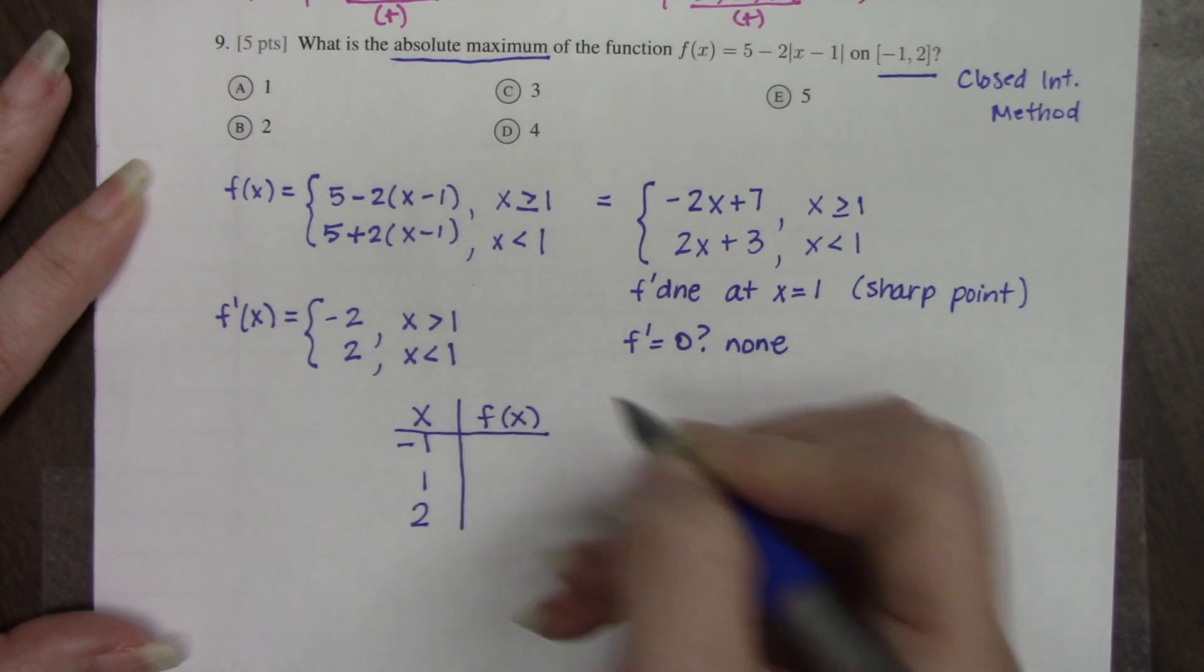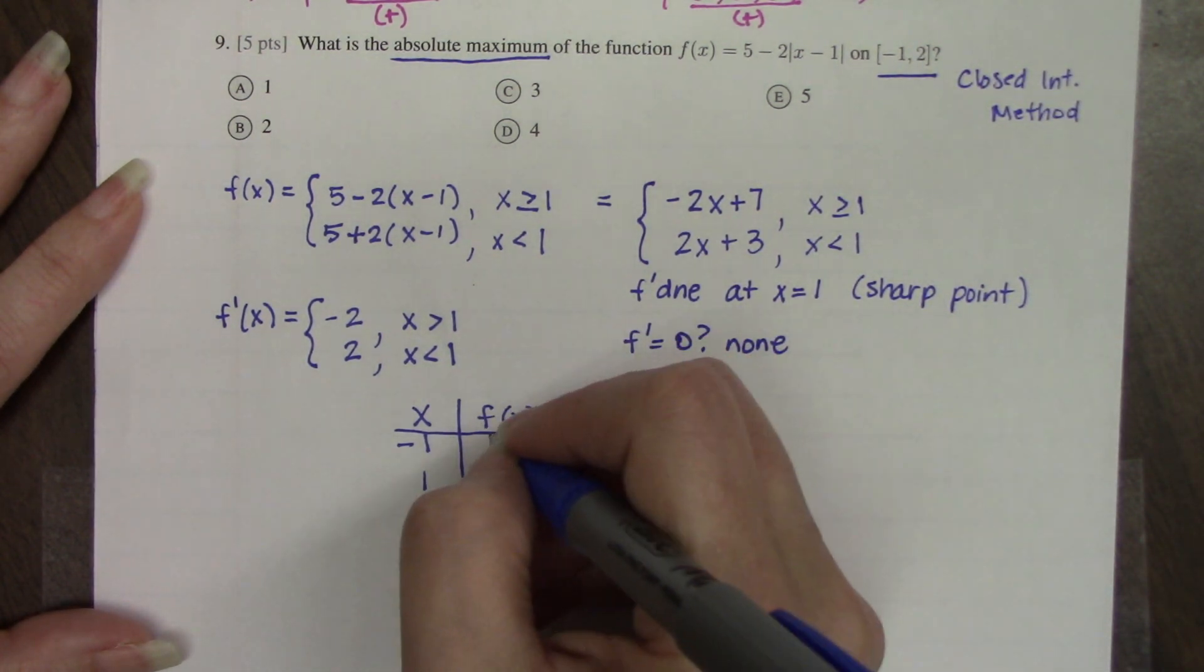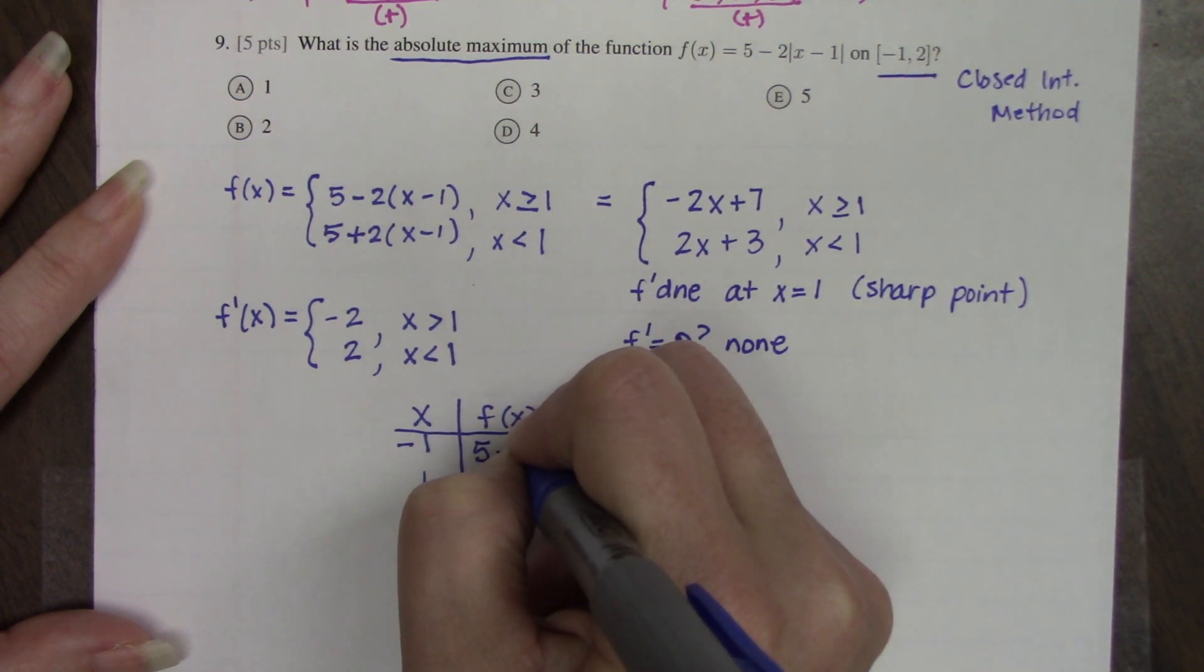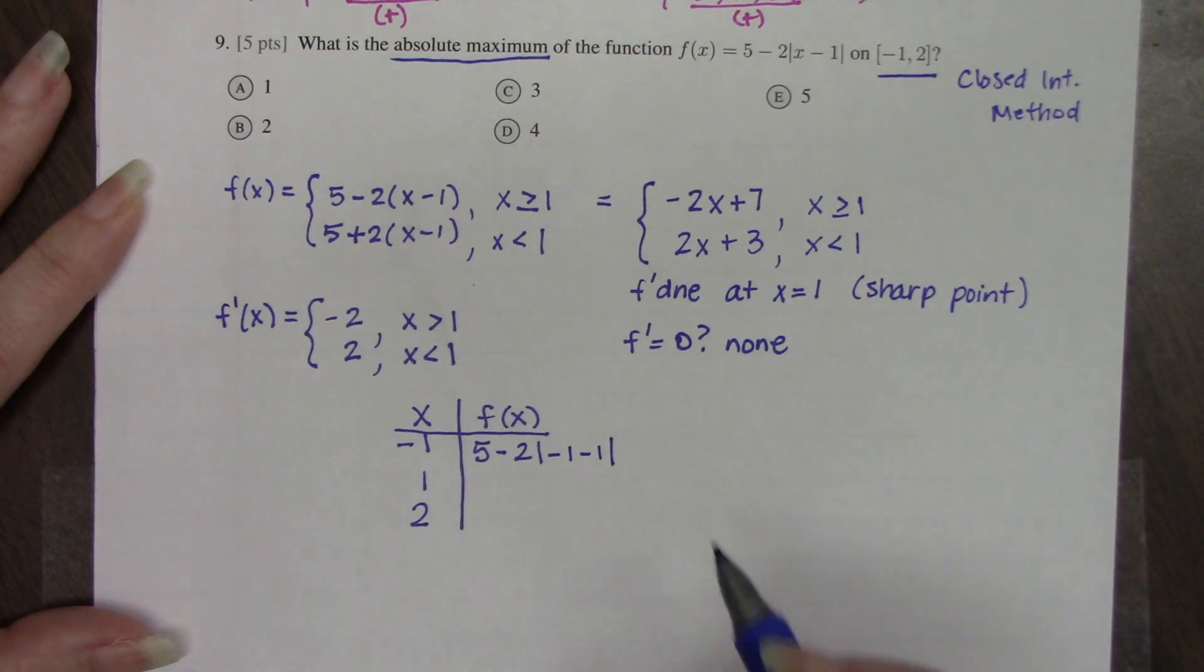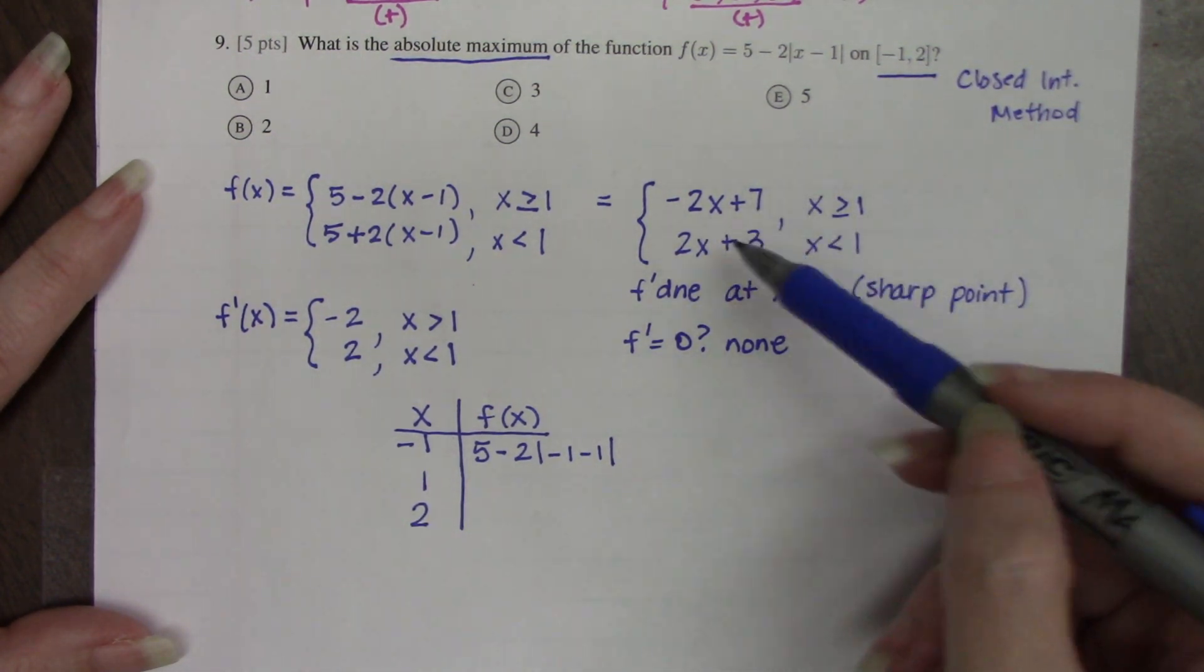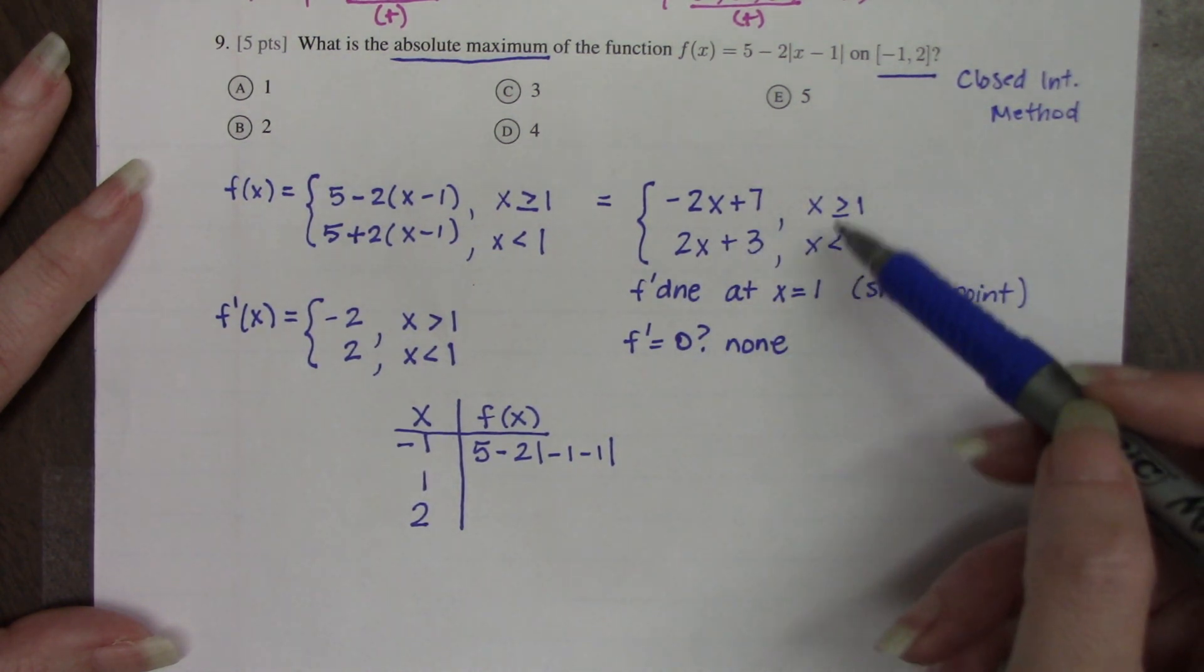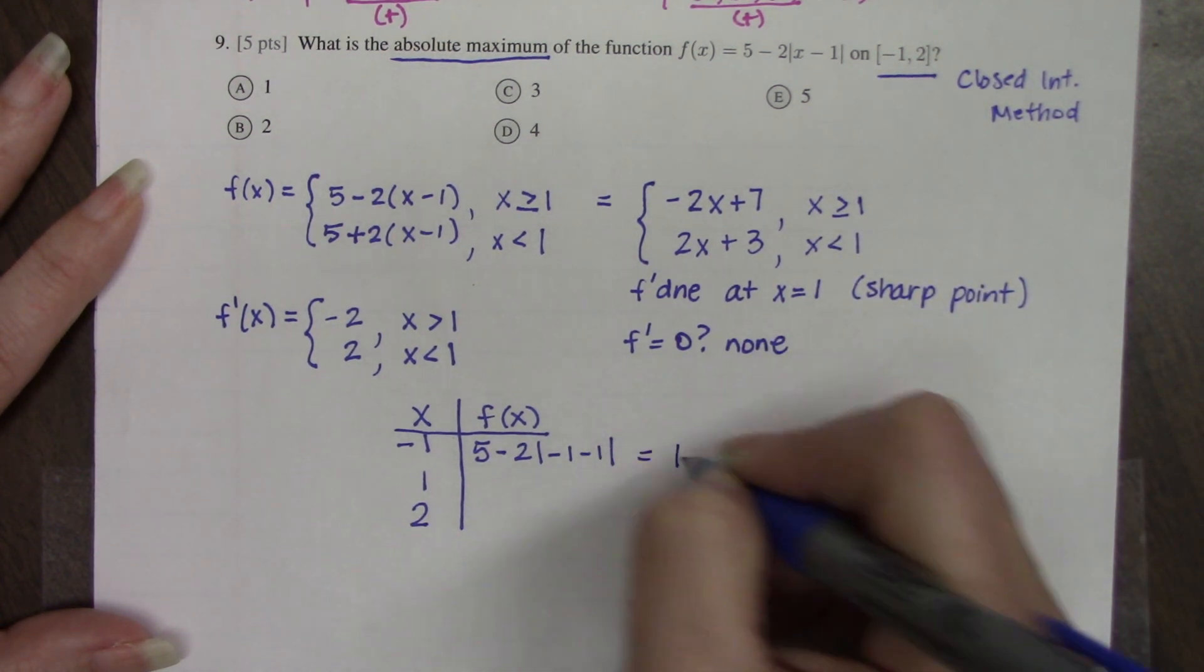So all of these values get plugged into the original function. So when I plug -1 in, I have 5 - 2|(-1) - 1|. Now you have two options here. You can plug it into the original function, or you could also plug it into the piecewise function that you've created here as well, because we can just look at our little domain here to figure out what to do with what. But this works out to be 1.